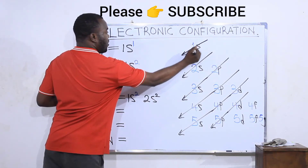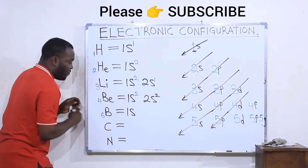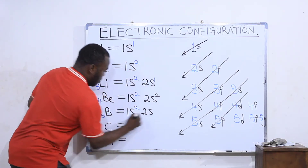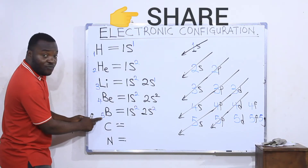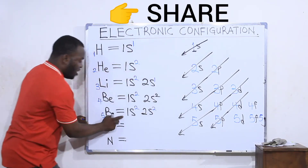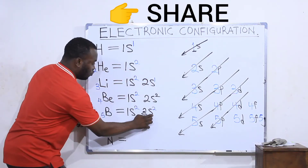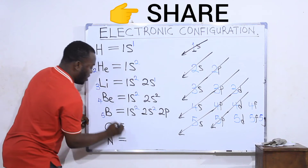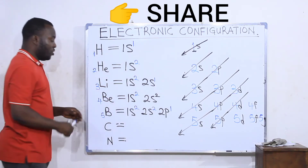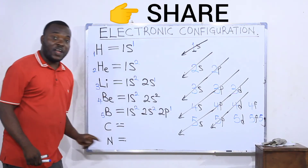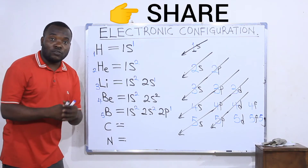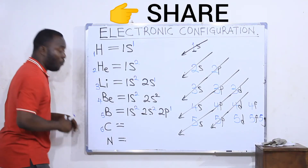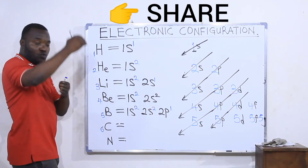For boron, element number five with five electrons: 1s collects two, remaining three. Then 2s collects two, remaining one. After 2s is filled, the next is 2p, which collects the remaining one electron. Boron's configuration is 1s² 2s² 2p¹ — total electrons: two plus two plus one equals five.